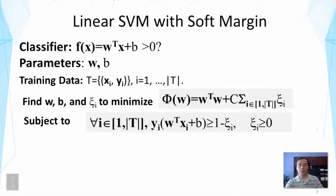The previous formulation does not allow any classification error. But sometimes the data may not be linearly separable — a single line cannot separate all points. To handle this, we introduce a soft margin by adding slack variables ξi, one for each data instance, to model the error allowed for each instance. The optimization principle stays the same: minimize training error while maximizing the margin.